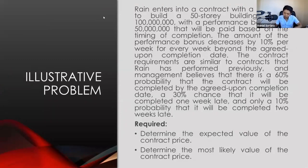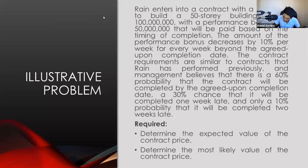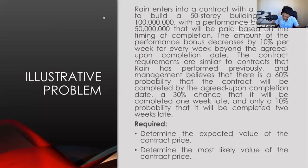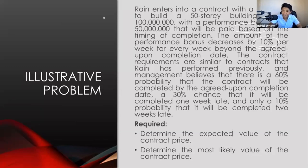Let's move on to another illustrative problem on variable consideration. Rain enters into a contract with a customer to build a 50-story building for 100 million pesos, with a performance bonus of 50 million that will be paid based on the timing of completion. This is another variable consideration because part of the transaction price is based on the outcome of a future event.